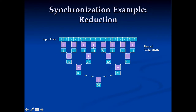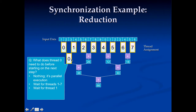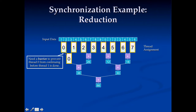Let's see where threads get assigned in this reduction. Thread zero handles the first element, thread one the second, and so on — eight threads doing the first stage. In the next stage, thread zero does the next chunk of work. But before it can proceed, it needs to wait for thread one to finish, because it doesn't know when thread one is done and could otherwise be adding garbage values. So we need a barrier here, and we need barriers all the way through each reduction step to ensure correct ordering.